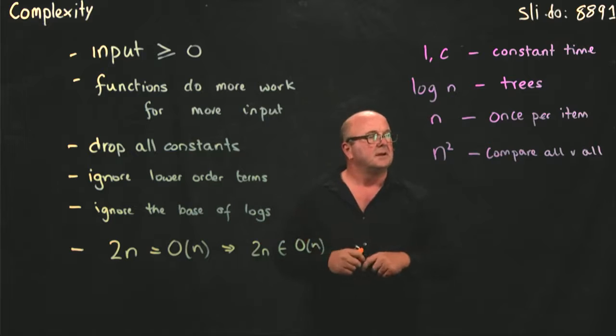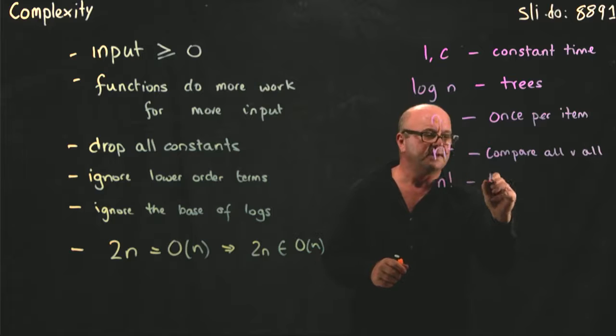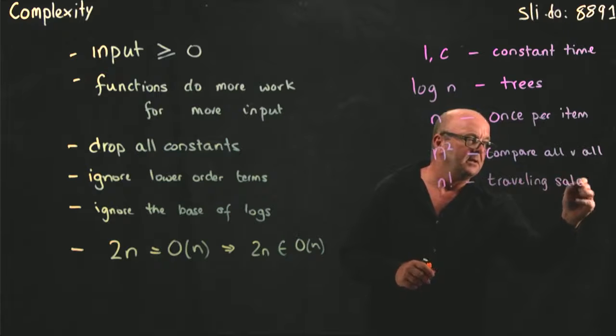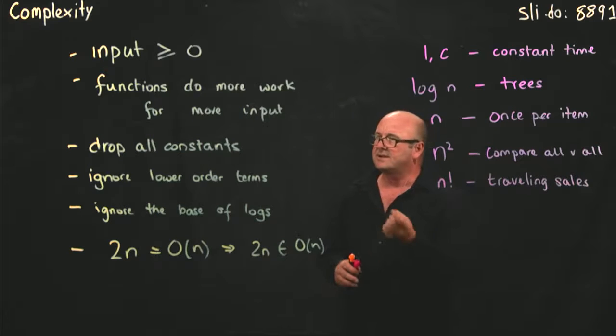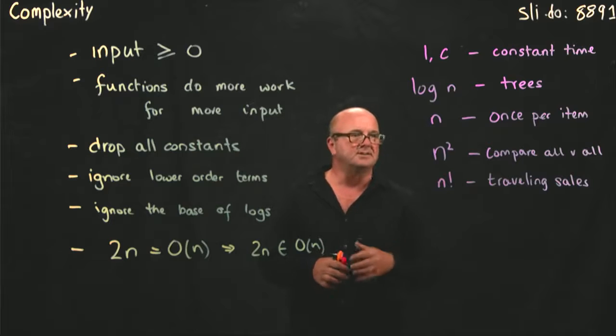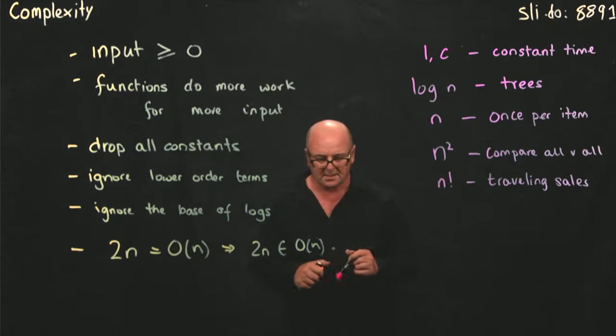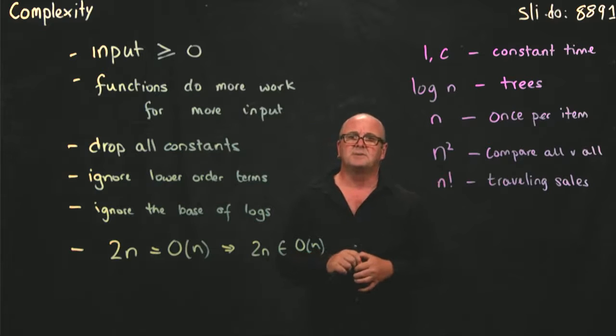If you're doing graph theory, you'll run into things like the traveling sales person problem, where you have somebody that has to visit a bunch of cities and they can only go to each city once. They're not allowed to go back through cities multiple times. How do you find the shortest route for that person to visit all the cities? The traveling sales person problem is typically an n factorial problem.